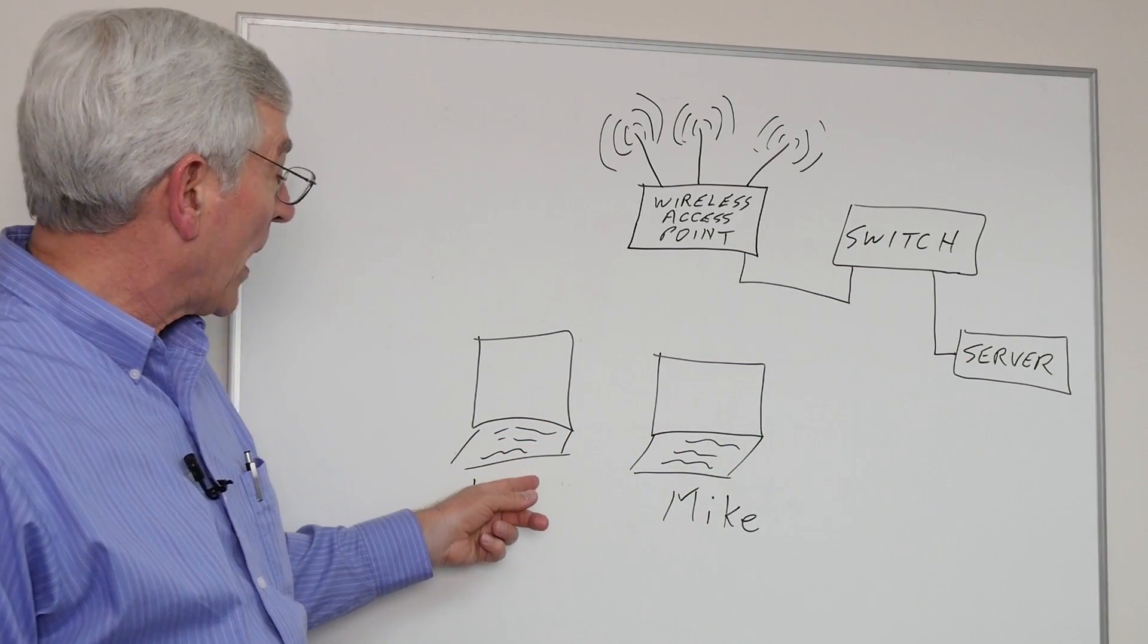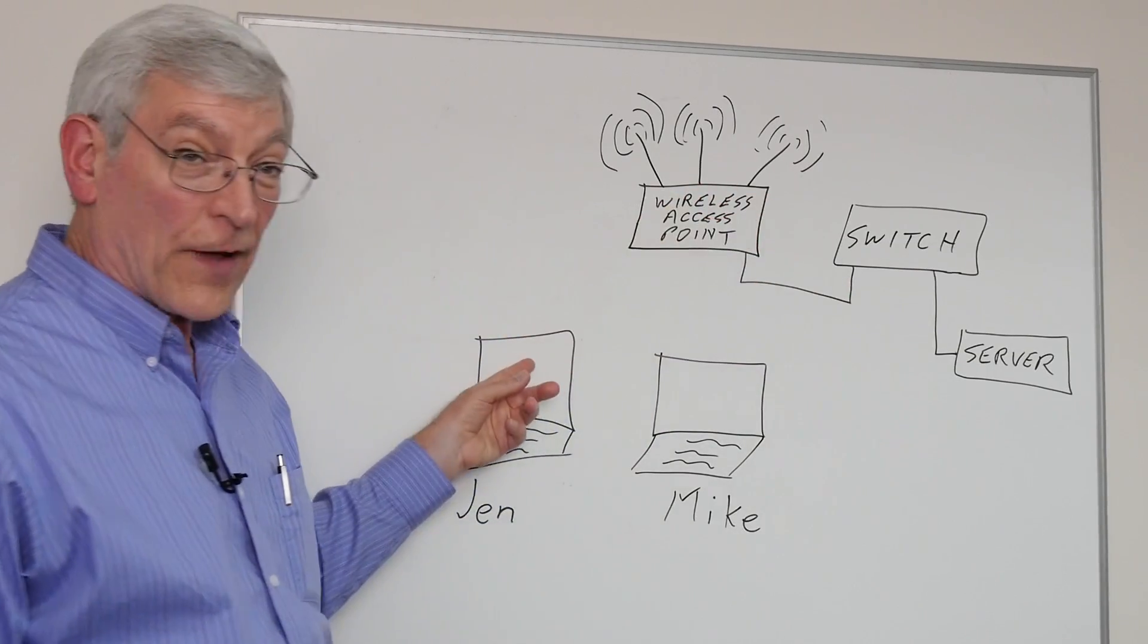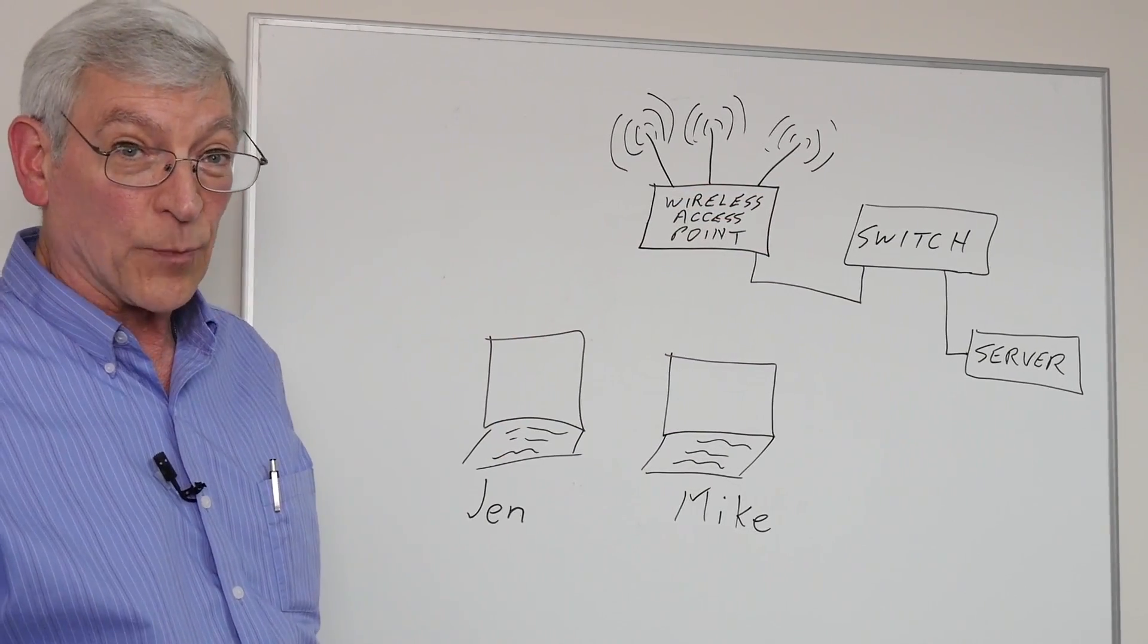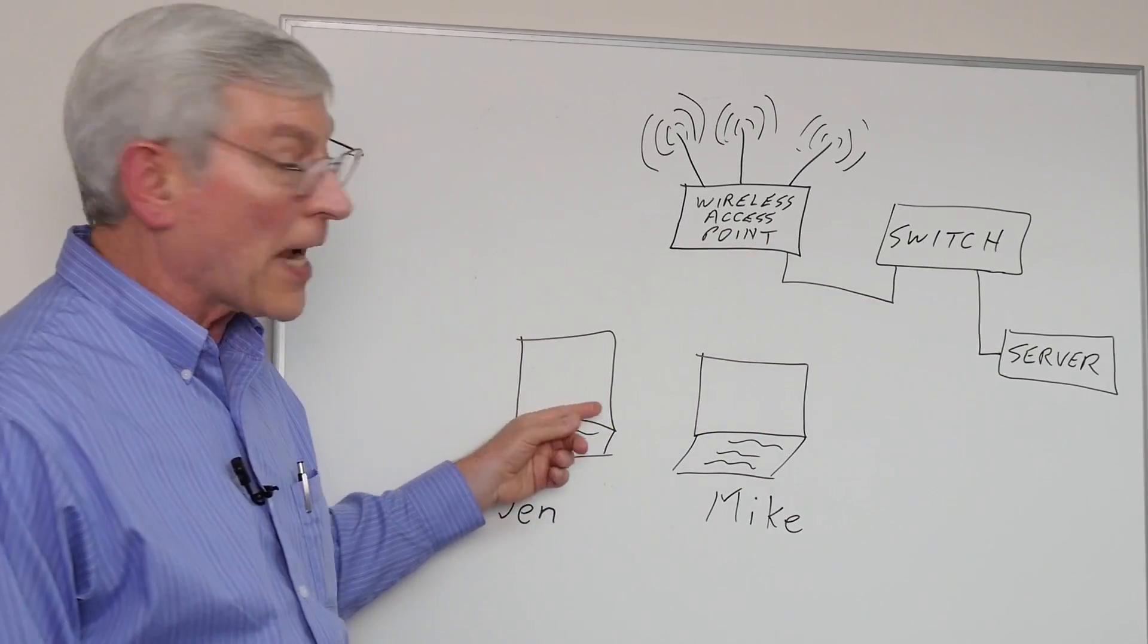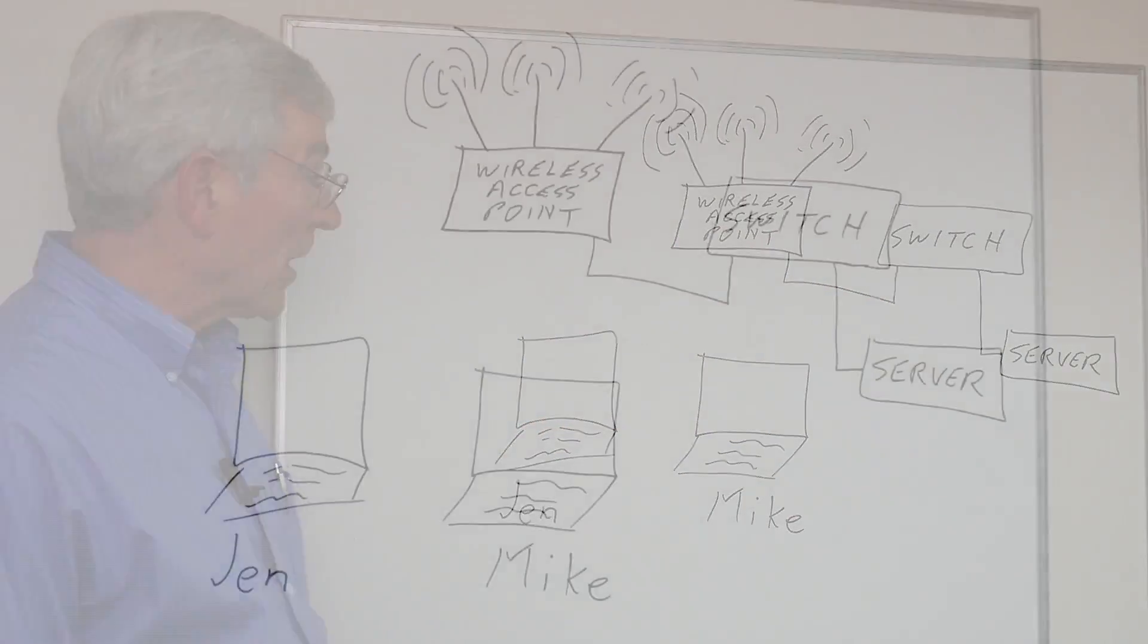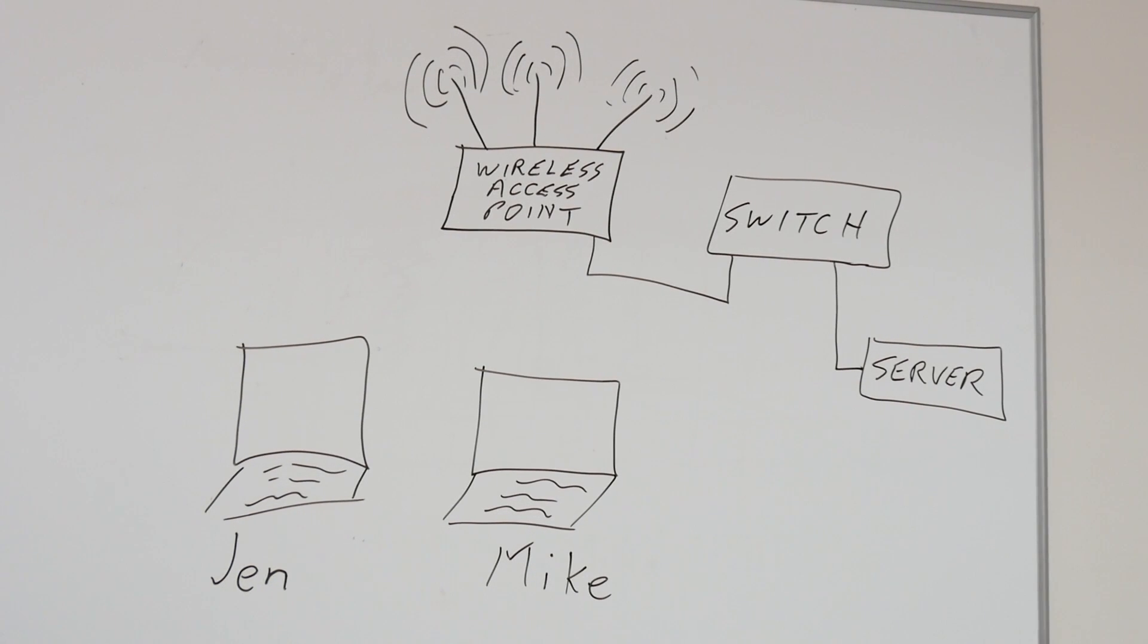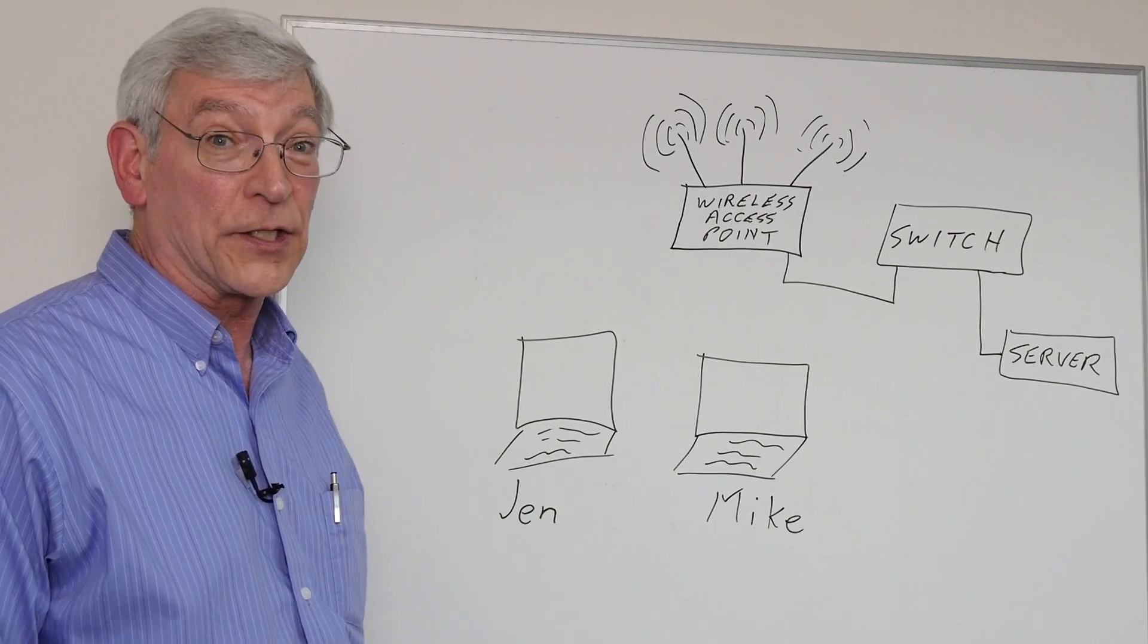If Jen tries to download a file by herself, then she'll have all of the available bandwidth from the wireless access point. But as soon as Mike tries to download a file at the same time as Jen, they'll each get only half of the available bandwidth. If we increase this to three or four users, life is good. But if we take this up to 20 or 25 users, they'll experience congestion that will cause them to complain about network performance.